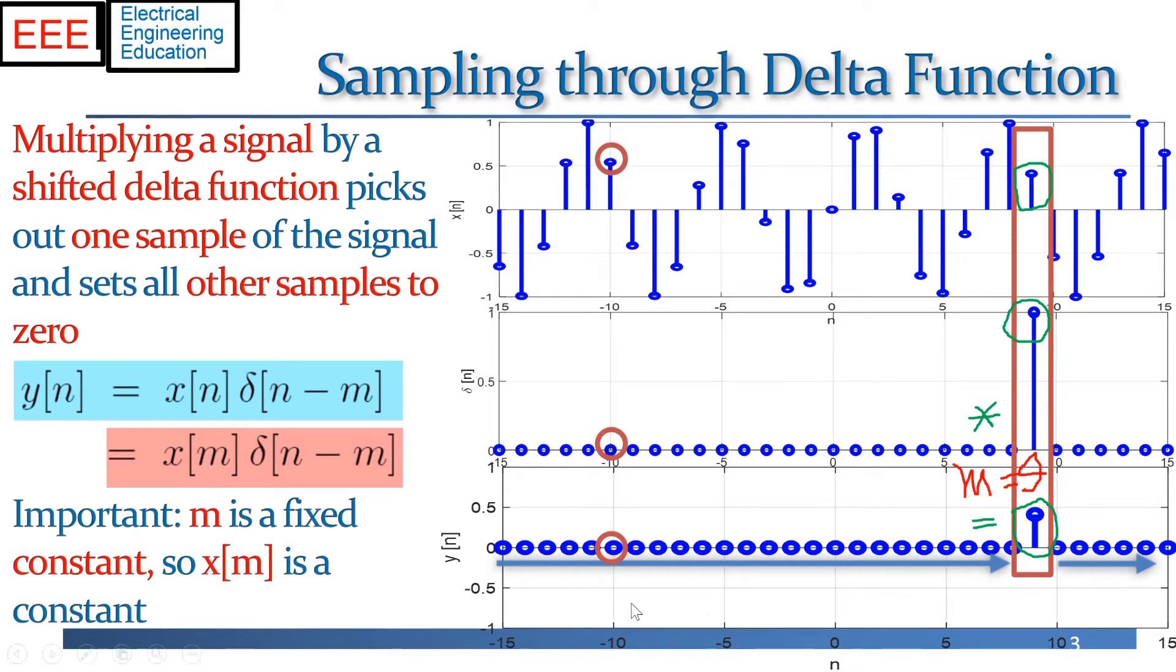And the really important thing here is that x at time point nine is a number. It's not a signal anymore. It's just a number. And we can write this more generally for any m, not just nine, as follows.